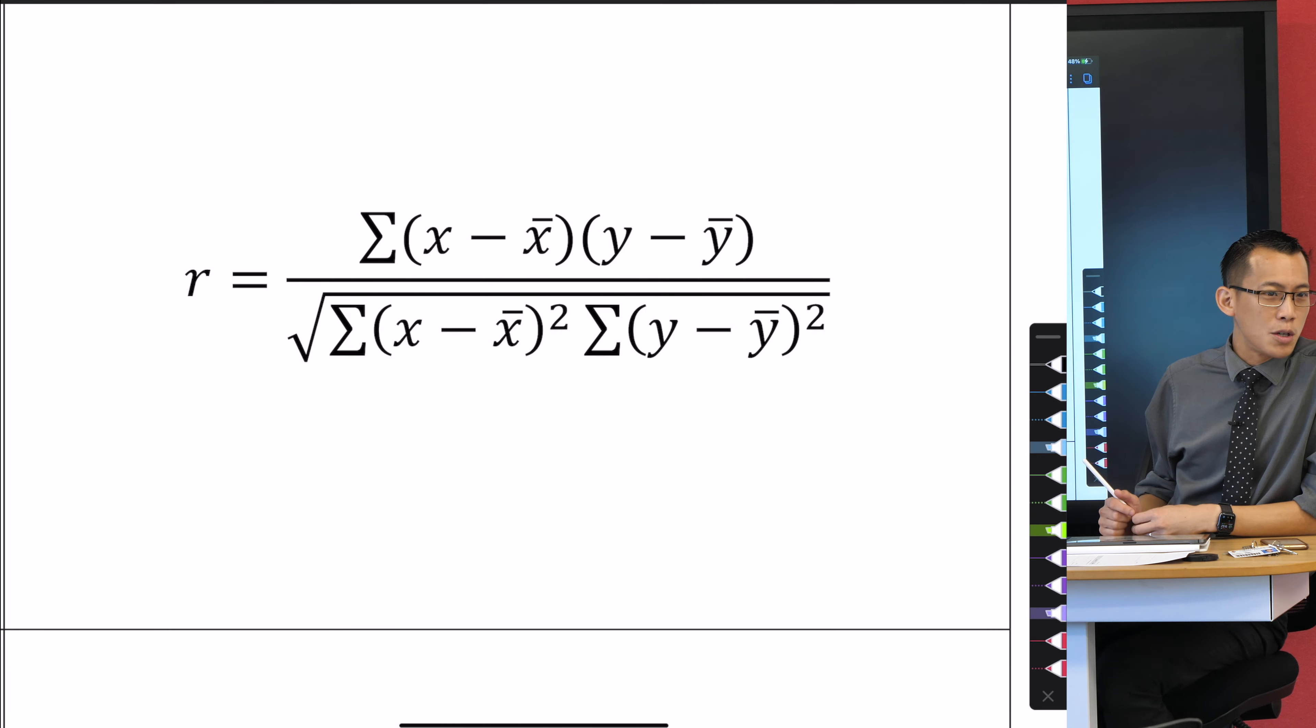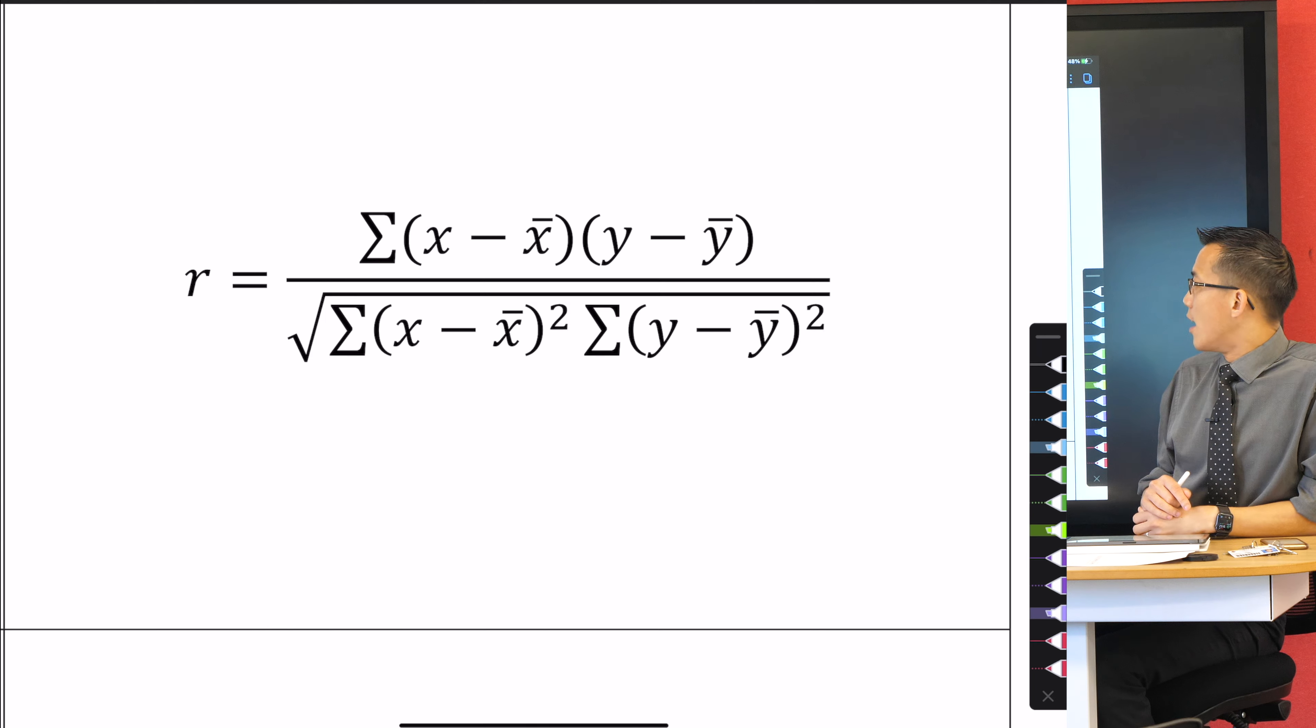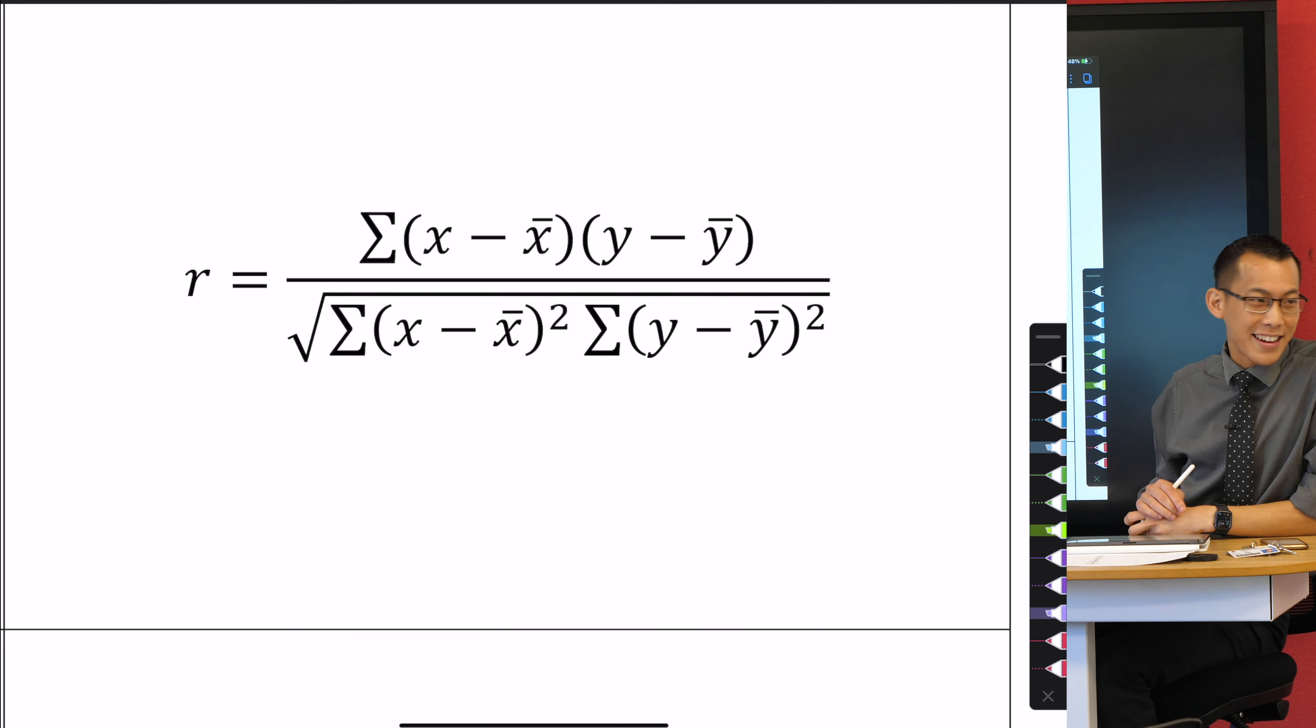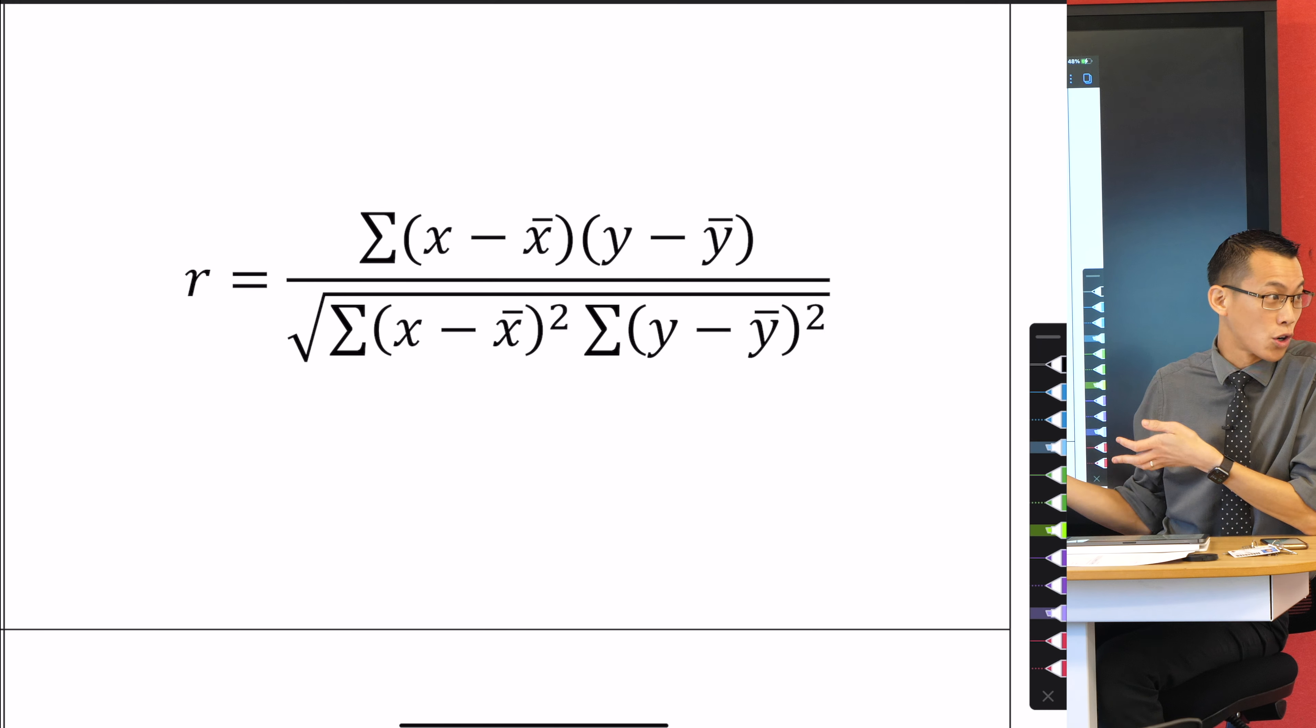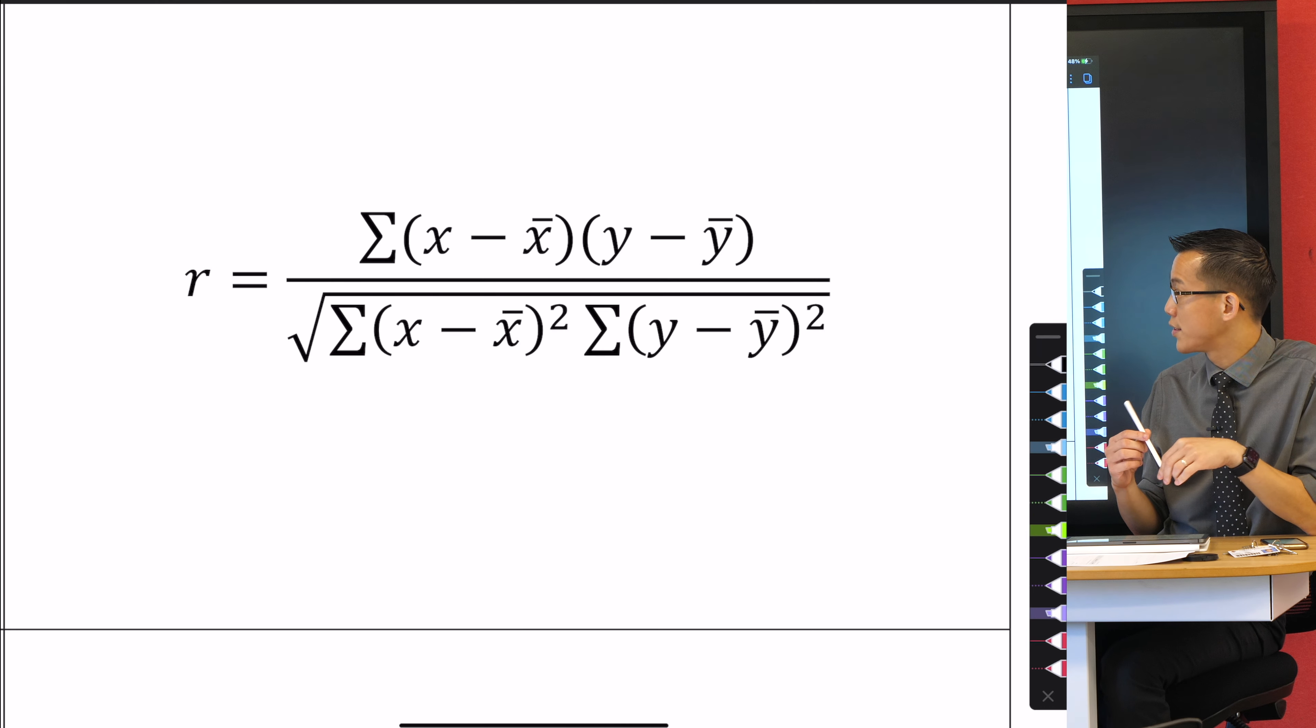You can signal to me that you've finished writing the formula when you put your pens down. r is the pronumeral of choice I guess when we talk about the correlation coefficient. I don't know why they didn't just use C for correlation.